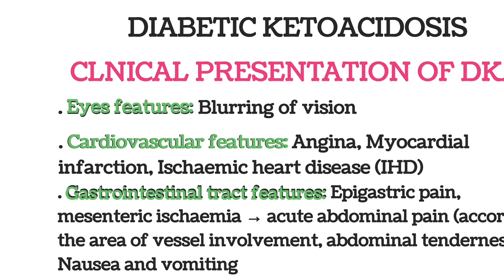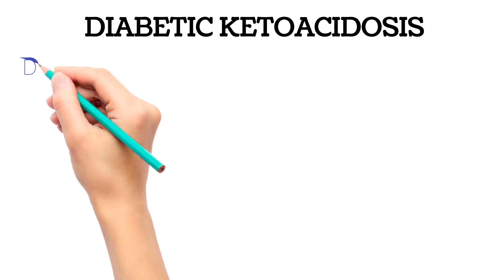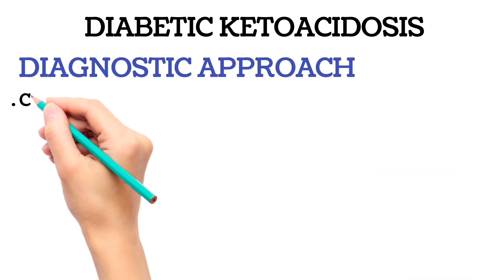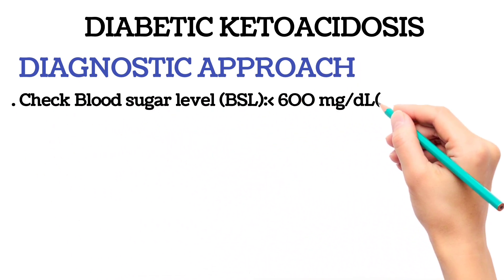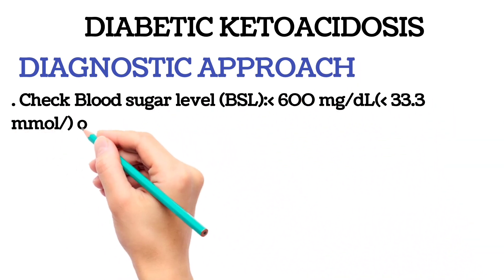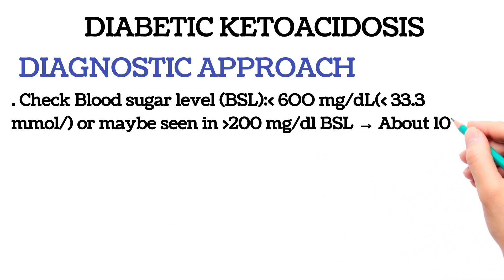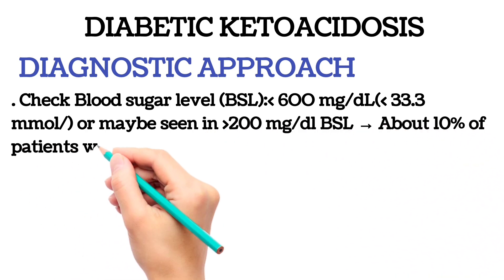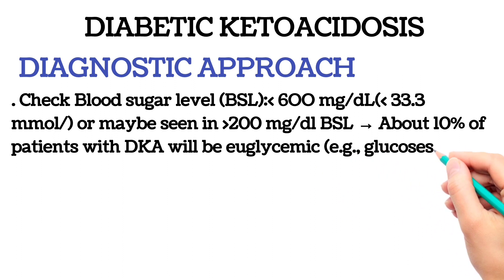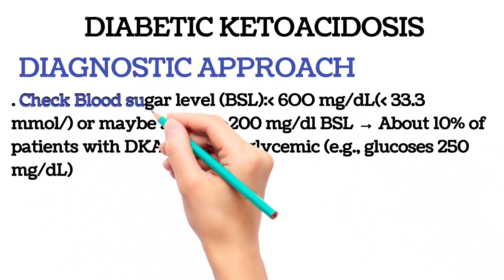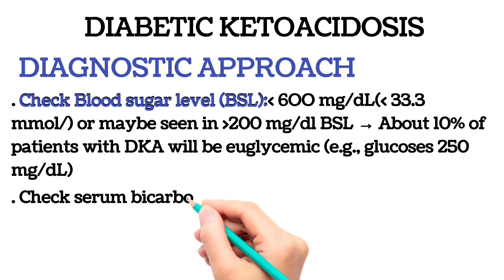Moving towards the diagnostic approach: check blood sugar levels. In DKA, blood glucose is typically less than 600 mg/dL or may be seen above 200 mg/dL. About 10% of patients with DKA will be euglycemic, i.e., glucose less than 200 mg/dL.